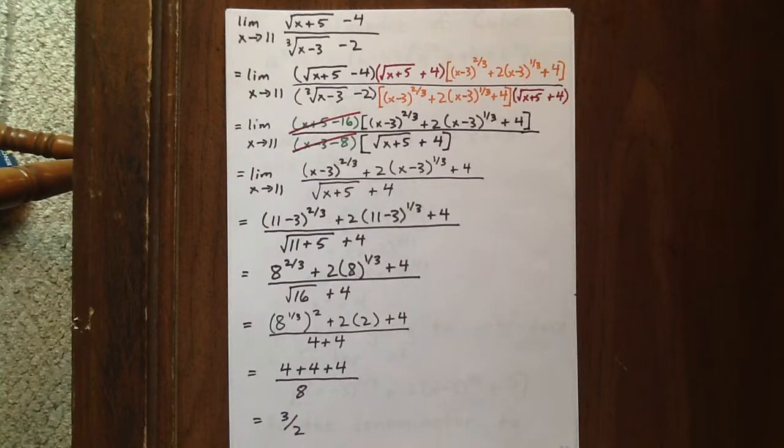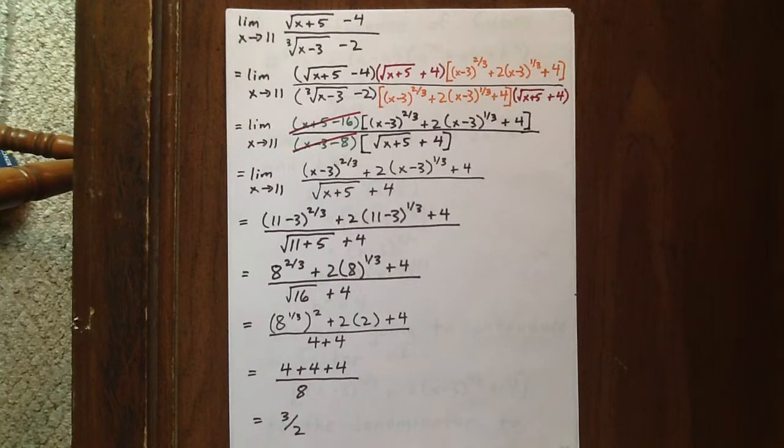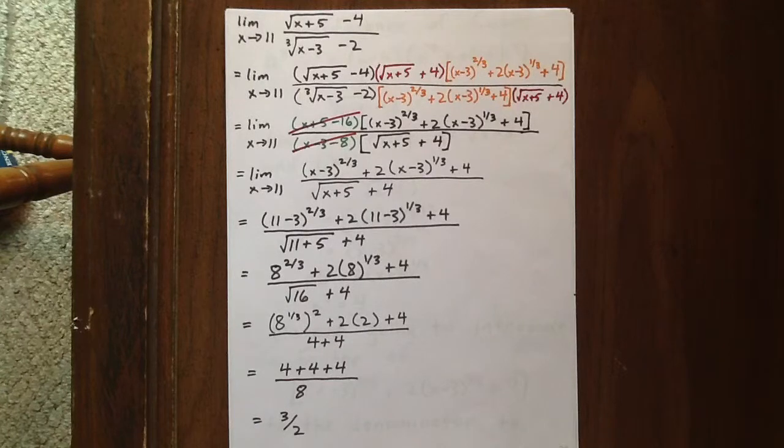In this question, we're taking the limit as x goes to 11 of the expression shown, and we have a square root and a cubed root to consider rationalizing.